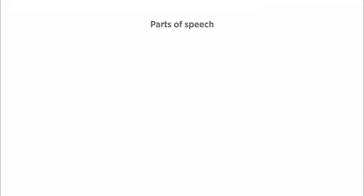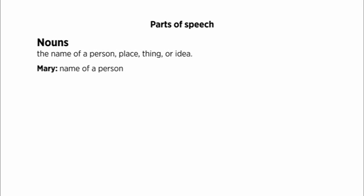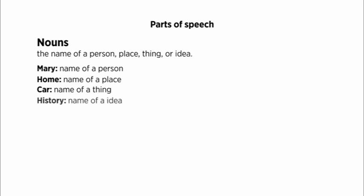For our first example of parts of speech we're going to be looking at nouns. What is a noun? A noun is the name of a person, place, thing, or idea. Here we have Mary — Mary is the name of a person. And here we have home — home is the name of a place. Then we have car — it's the name of a thing. And history is the name of an idea. So nouns are the names of persons, places, things, or ideas.